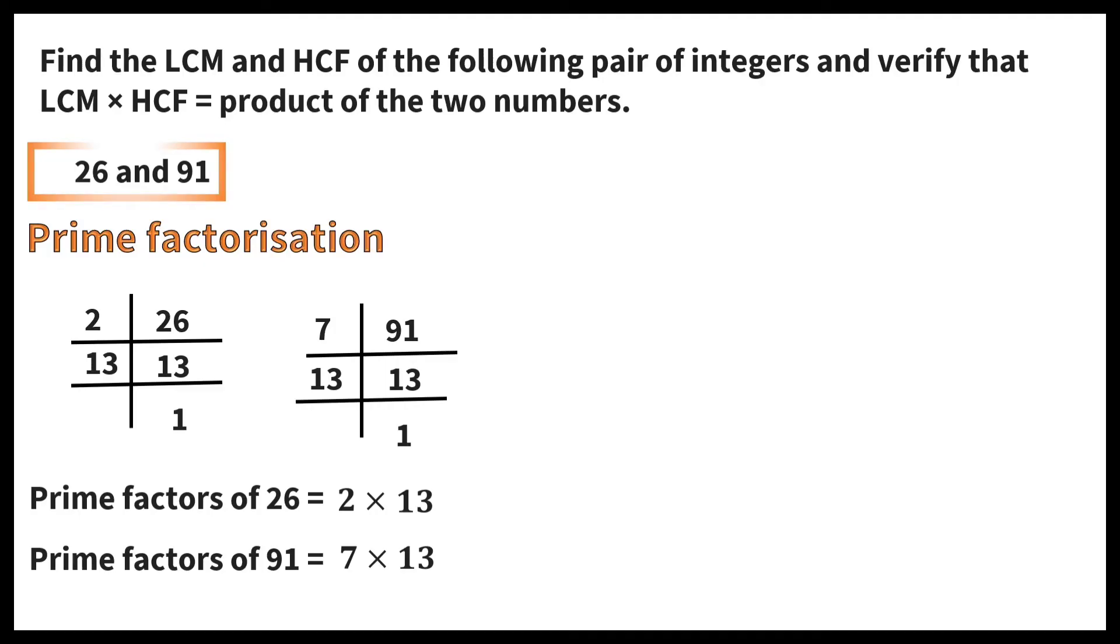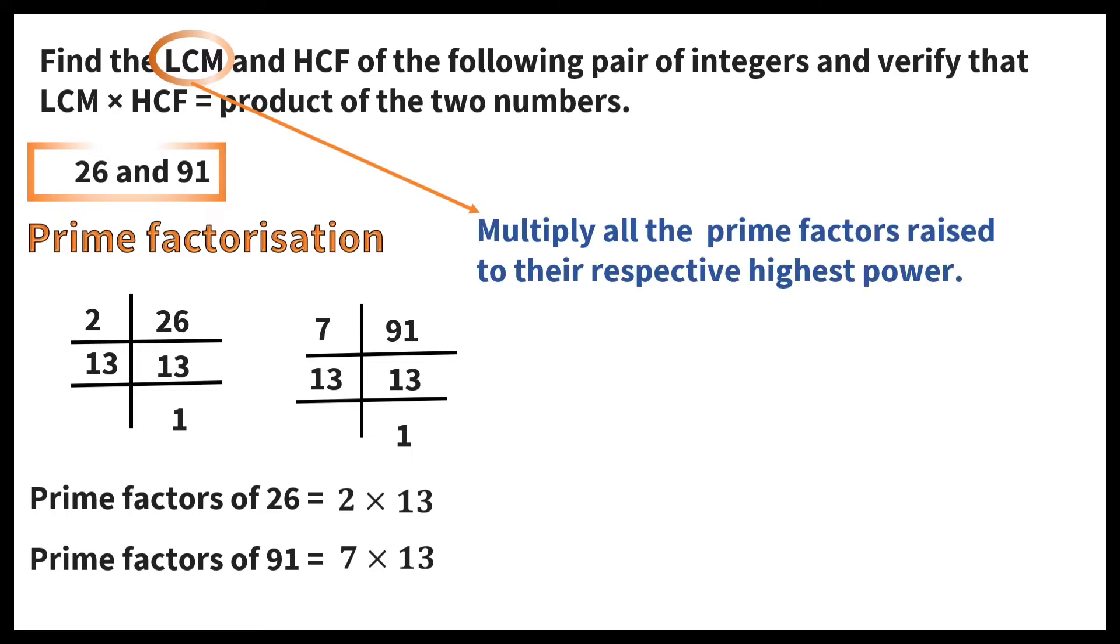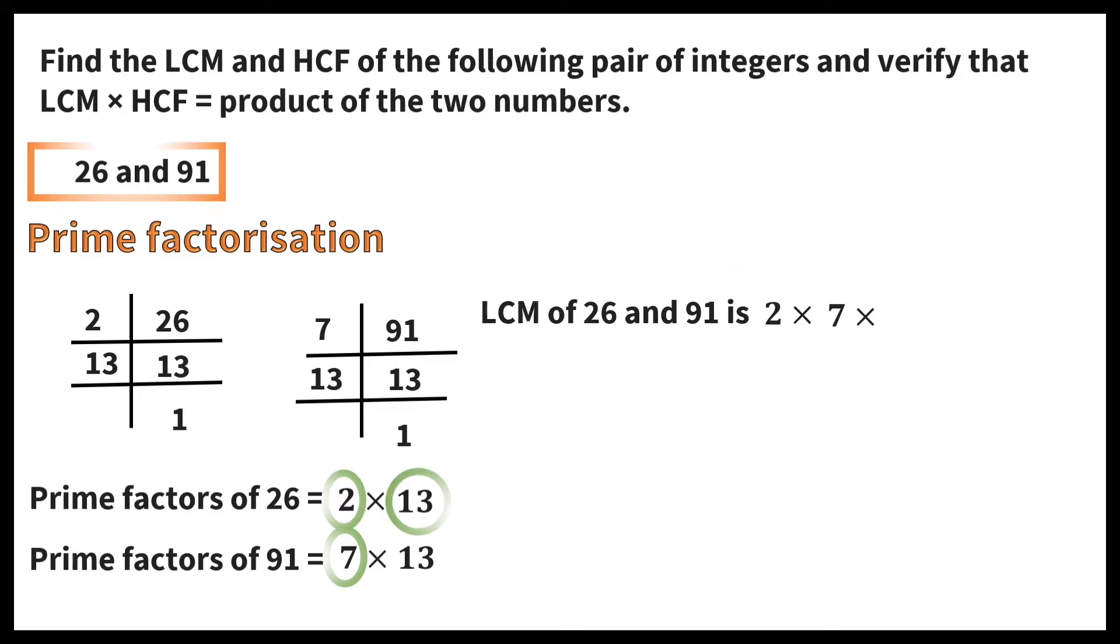In order to get LCM, multiply all the prime factors raised to their respective highest power. LCM of 26 and 91 is 2 into 7 into 13. 13 is written only once. So LCM is equal to 182.